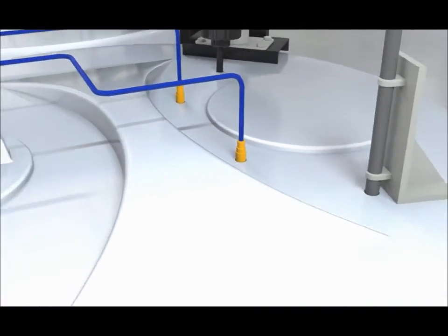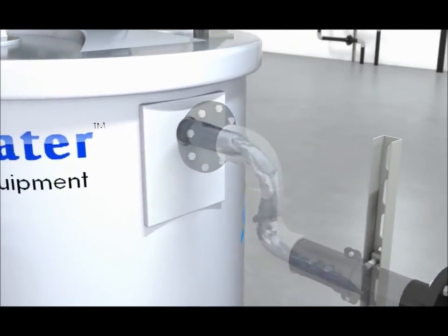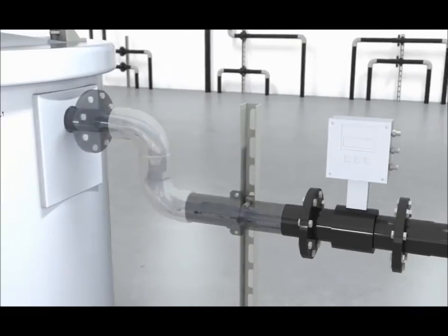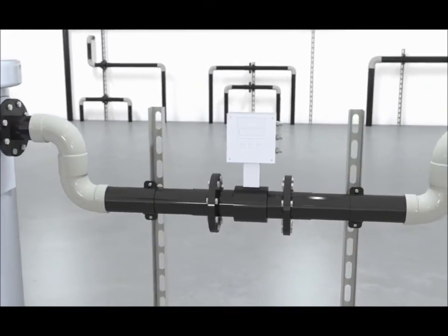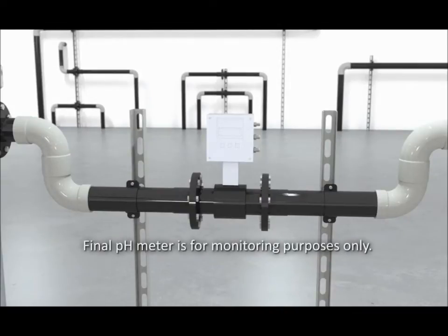The solution continues to agitate as the water cascades over from stage 2, and the treated pH neutralized wastewater is passed under gravity flow conditions to the final pH monitoring device and flow meter. The final pH meter is for monitoring purposes only. No chemicals can be controlled through this meter.